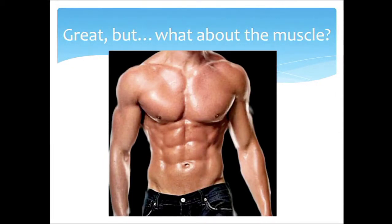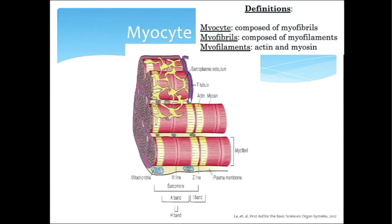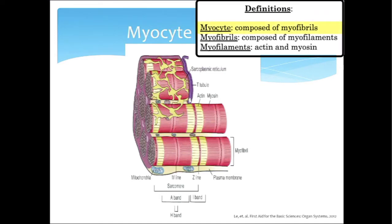Let's talk about the myocytes themselves and what is going on there. We're going to take a couple of different views of cardiac myocytes — zooming in and out at different levels. Starting relatively zoomed out, this whole thing is an example of a cardiac myocyte. Contained within the myocyte — and it's important to understand the anatomy because it dictates the physiology — you have these bundles called myofibrils.